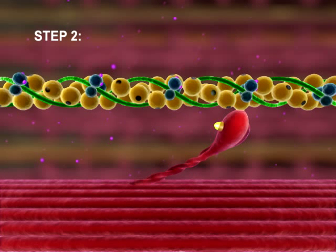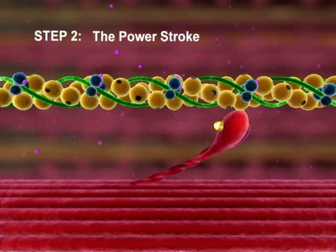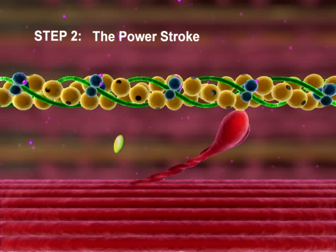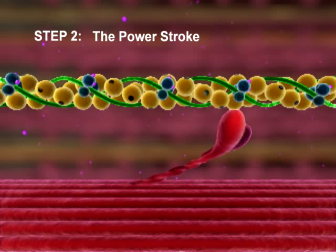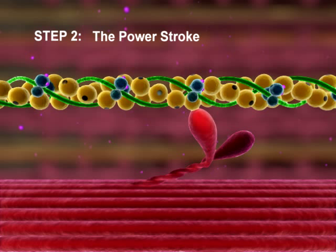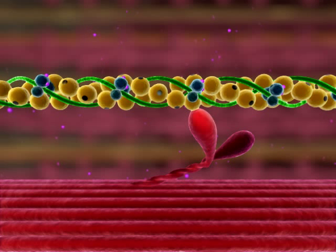Step 2: The Power Stroke. ADP is released and the activated myosin head pivots, sliding the thin myofilament toward the center of the sarcomere.